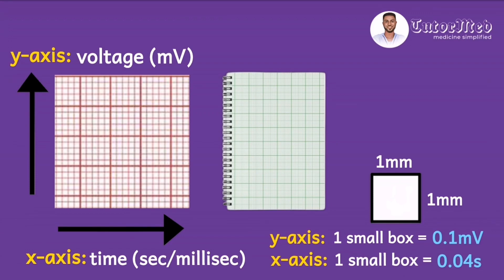Please keep these basic dimensions in mind: for a small box, it is 0.1 millivolts high and 0.04 seconds, or 40 milliseconds, wide.